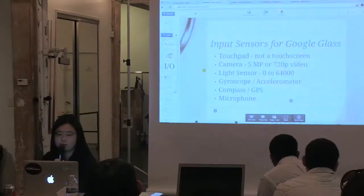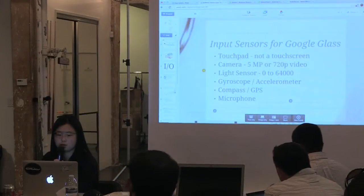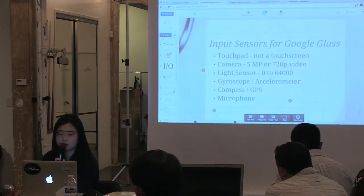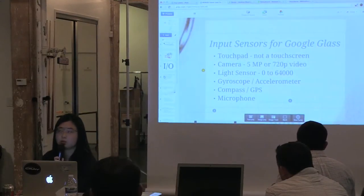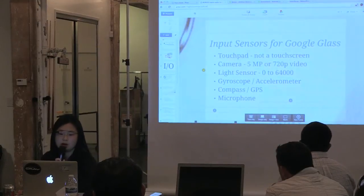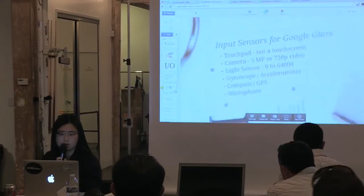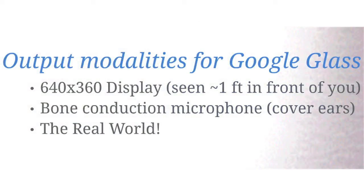There is a camera with 5-megapixel, 720p video. There's a light sensor which gives a single-axis reading from 0 to 64,000. There's the InvenSense gyro accelerometer, three-axis compass, GPS, and a microphone. For output, there is a tiny LCD display that projects onto an optic — a 640 by 360 LCD screen actually projected onto the glass.